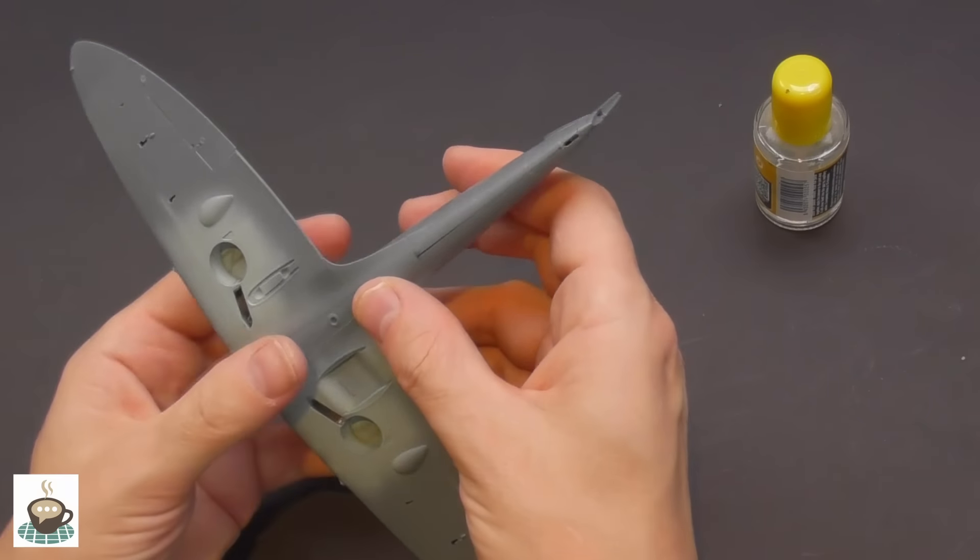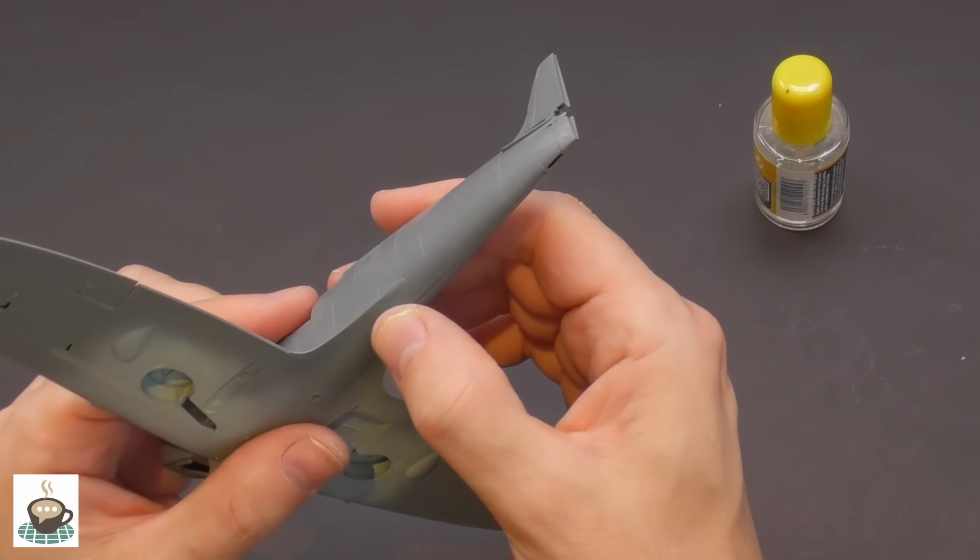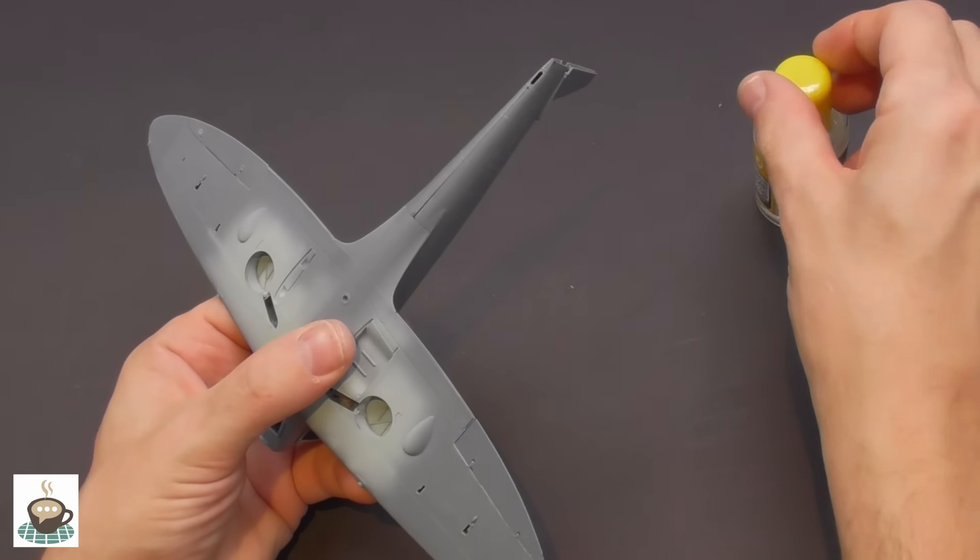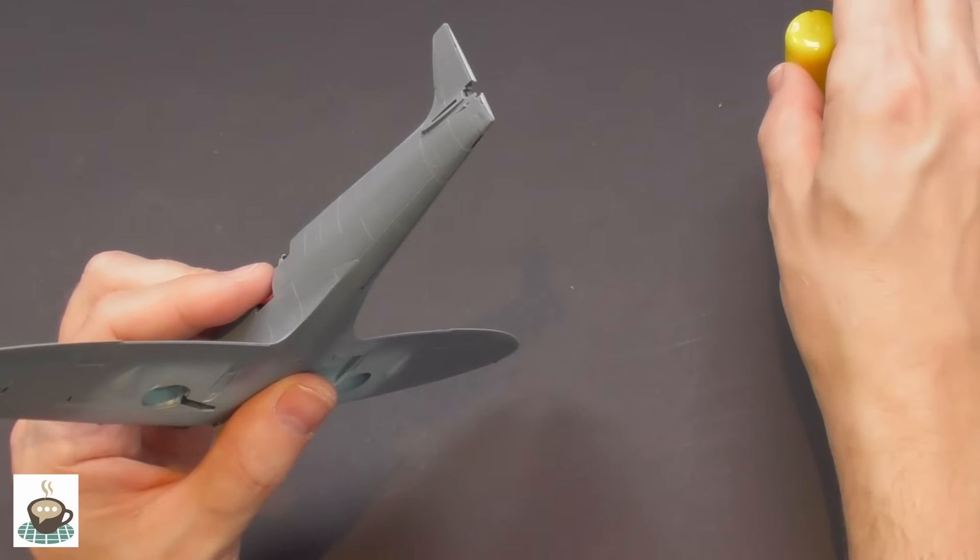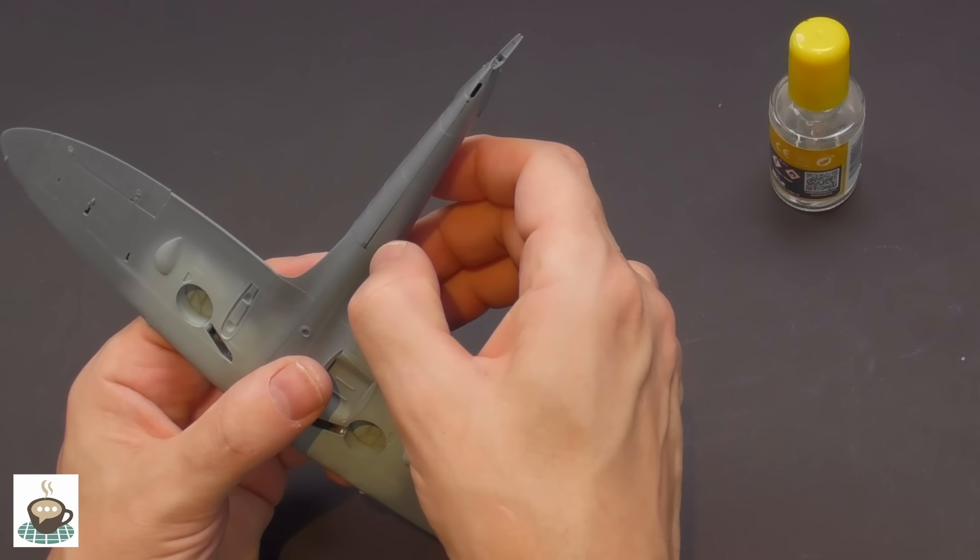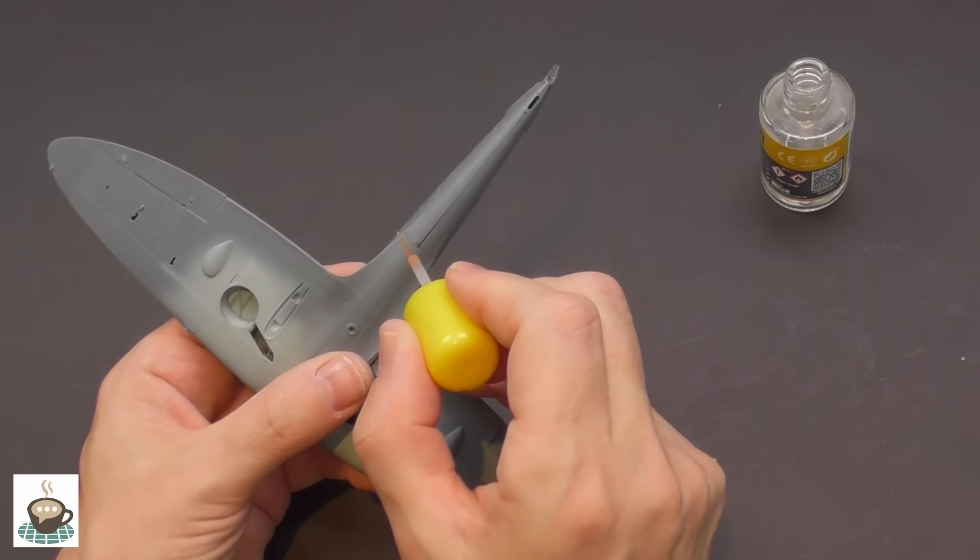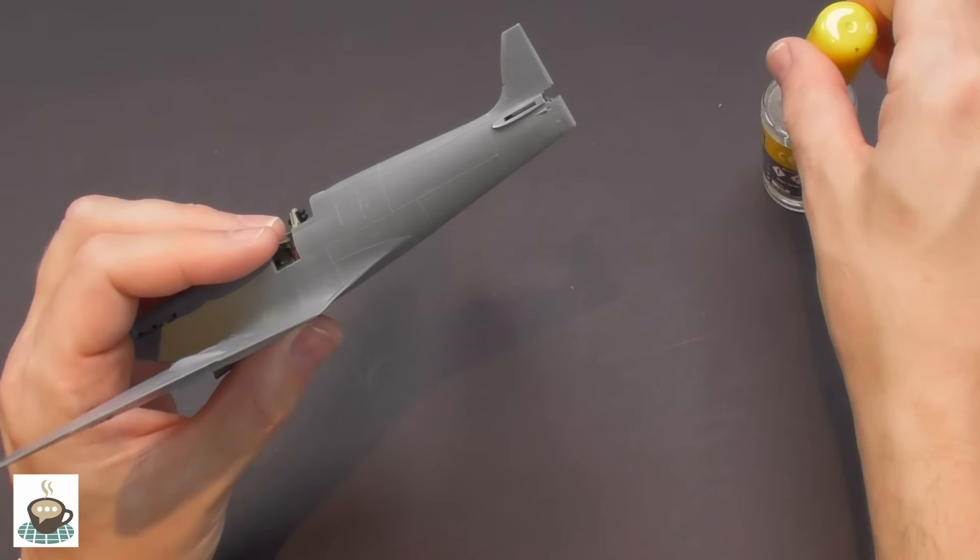Now for the main event in any airplane model, and that is the wing to fuselage joint. Again as I've said, it's pretty good, it's not perfect but it's pretty good. It's no Armour Hobby Hurricane, but still really good. It's just a slight step at the back there, but I'm confident enough to deal with that later. So we'll just start gluing it up.